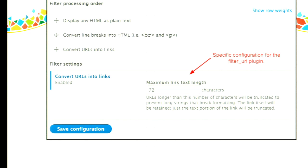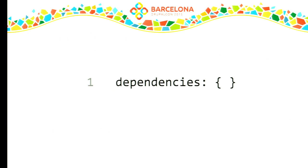We can build up from all the plugin configuration the filter format configuration. Plain text as provided in core has no dependencies, because all the plugins it configures are also provided by the filter module. As I said, configuration entities depend implicitly on the module that provides them. So a filter format is provided by filter, all the plugins are provided by filter — there are no more dependencies.